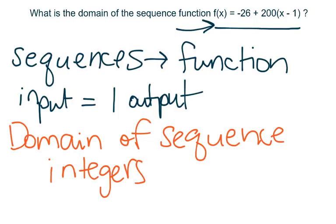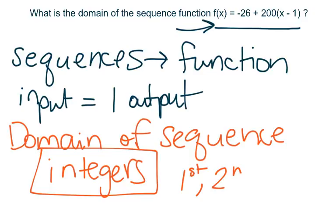The reason a sequence can only have integer inputs is because in a sequence we're talking about the first term, the second term, the third term,